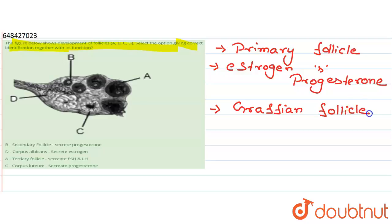Last one is given C is corpus luteum secretes progesterone. So yes, C is corpus luteum and it secretes progesterone. So option C, this one or last option, corpus luteum - C is corpus luteum and it secretes progesterone - will be the right answer. Understood, thank you for listening.